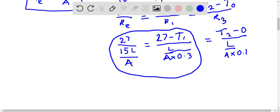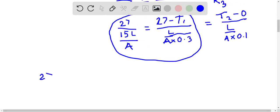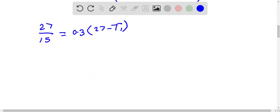This will give us 27/15 = 0.3 times (27 - T1). Here we have T1 equal to 21 degrees Celsius. So this is the first interface temperature T1.